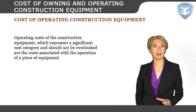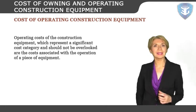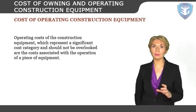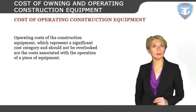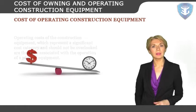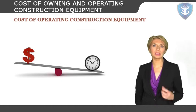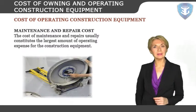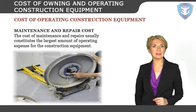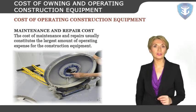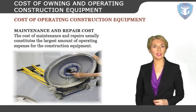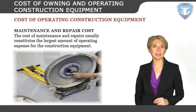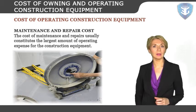Operating costs of construction equipment represent a significant cost category and should not be overlooked. They are the costs associated with the operation of a piece of equipment and are incurred only when the equipment is actually used. Maintenance and repair costs usually constitute the largest amount of operating expense. Construction operations can subject equipment to considerable wear and tear, but the amount of wear varies enormously between different equipment items and different job conditions.